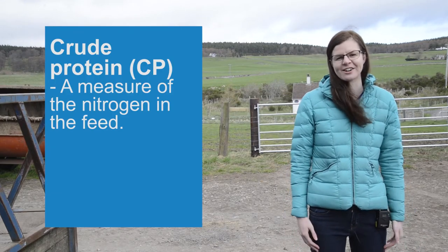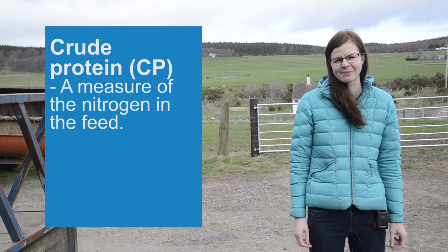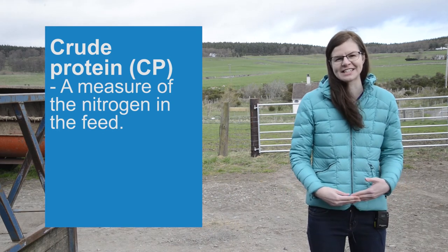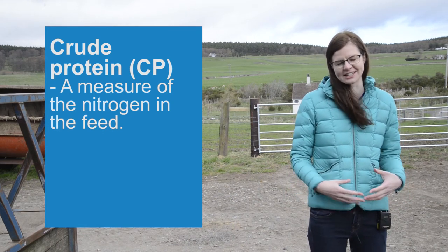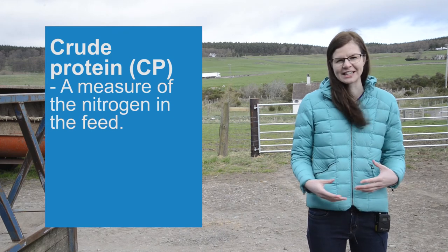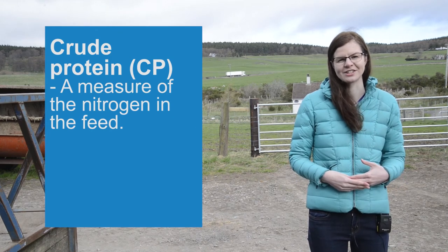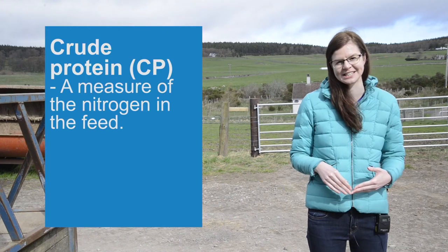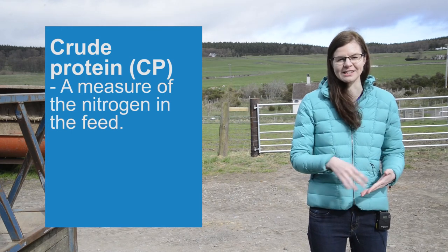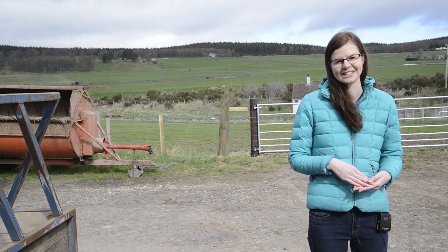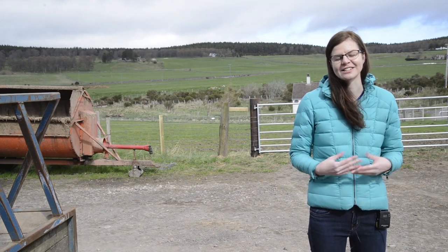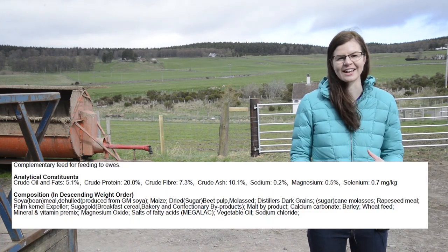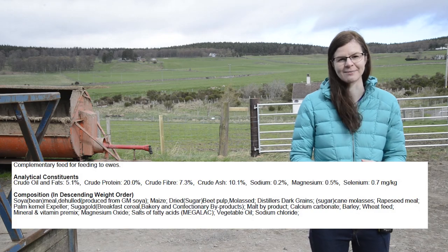So crude protein is a term that we use because it's based on the nitrogen content of the feed, which gives an indication of how much protein is potentially there. So if you look at a feed label and it gives you a value of 18% crude protein, this will be quoted on a fresh weight basis and it is based on how much nitrogen is in that feed. It doesn't give you an indication of the quality of the protein, which is something you need to look at based on the ingredients of what is in the bag.